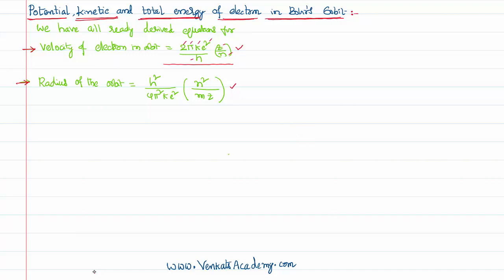Similarly, the radius of the orbit is given by h²/(4π²kme²) multiplied by n²/z, where h is Planck's constant, 4π² is a constant, k is 1/(4πε₀), e is the charge of an electron, n is the principal quantum number, z is the atomic number, and m is the mass of the electron. Knowing these two equations, we can further start deriving equations.